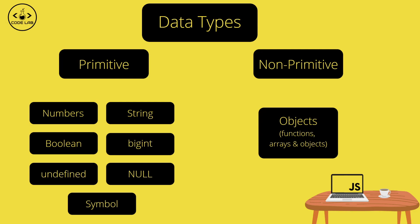The first question you're probably wondering is what the difference is between primitive and non-primitive data types. The clue is in the name — primitive means simple or basic. These data types hold single and simple values, they're immutable meaning we can't change their values, and they have no properties. Non-primitives are essentially the opposite: more complex and able to store more than one value.